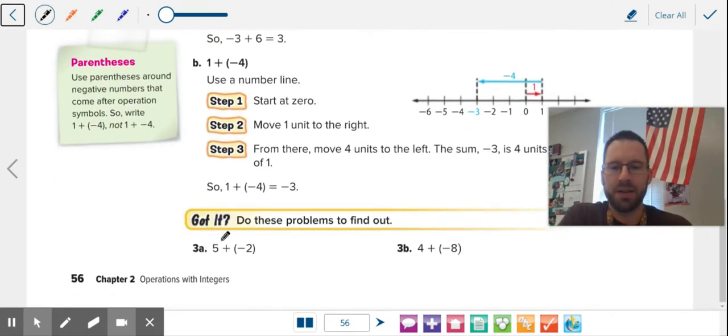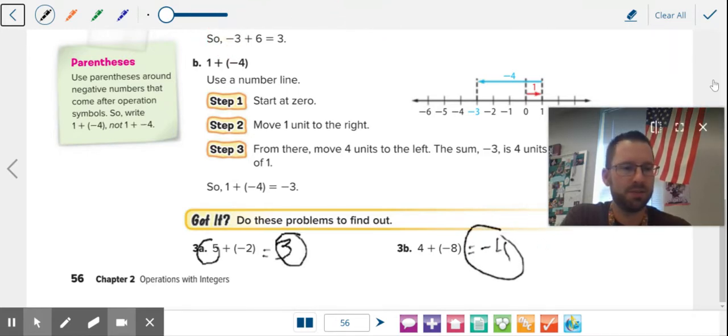Let's take a look at a couple of examples here. Here we have different signs. Which one has more power? The positives. So it's going to be a positive answer. Five minus two is three. Here, different signs. Negatives have more power now. Eight minus four is four. Make sure you circle those answers. On we go.